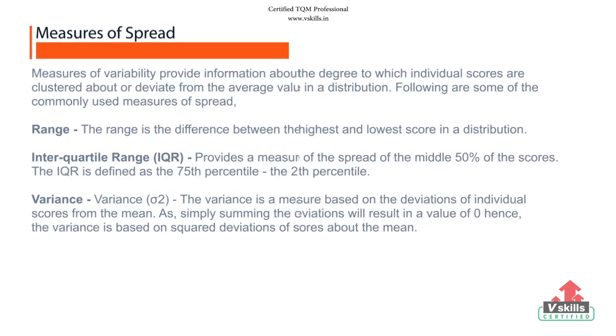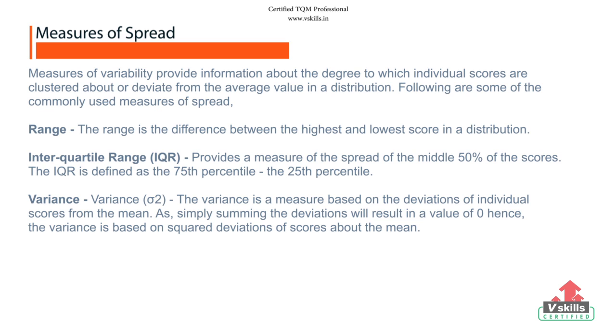Measures of spread. Measures of variability provide information about the degree to which individual scores are clustered about or deviate from the average value in a distribution. Following are some of the commonly used methods of spread. Range. Range is the difference between the highest and lowest score in a distribution.